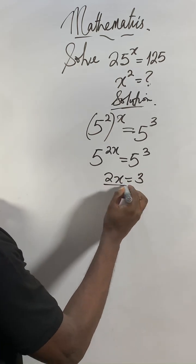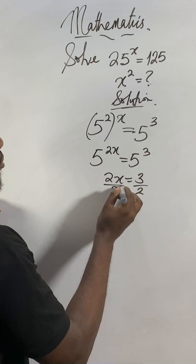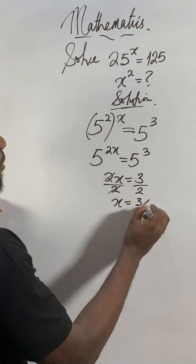So to find x now, I will divide both sides by 2. 2 will cancel, x will be equal to 3 over 2.